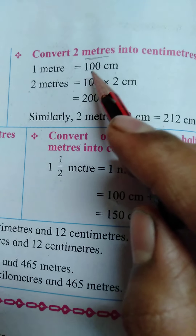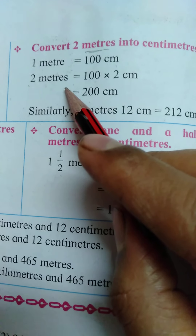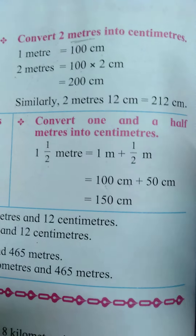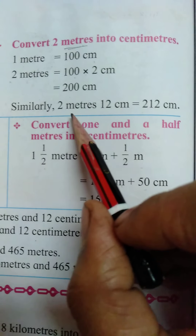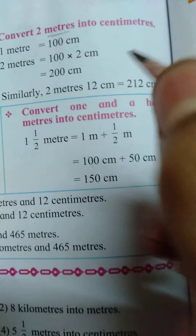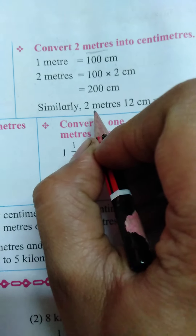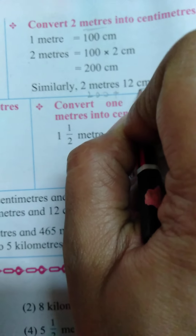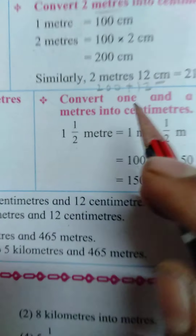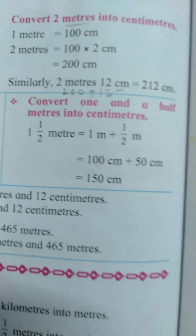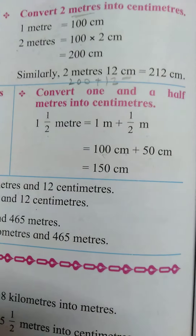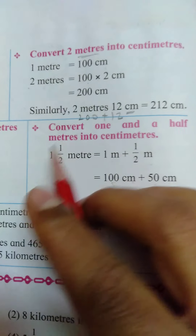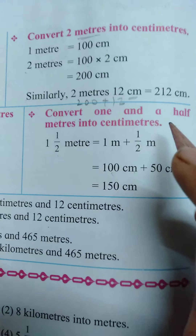Metres into centimetres: first we have to write the value of 1 metre. 1 metre is equal to 100 centimetres. Then 2 metres is equal to 100 into 2, what is the answer? 200 centimetres. And if we take 2 metres and 12 centimetres, then the value of 2 metres is 200 centimetres, plus 12 — already in centimetres — so the answer is 212 centimetres. Understood, students?